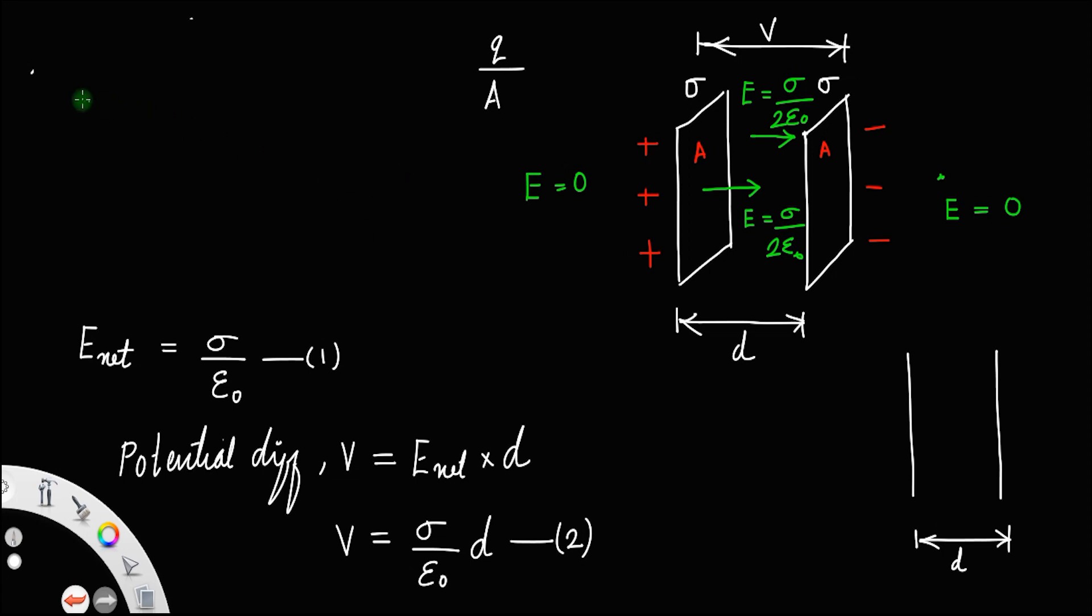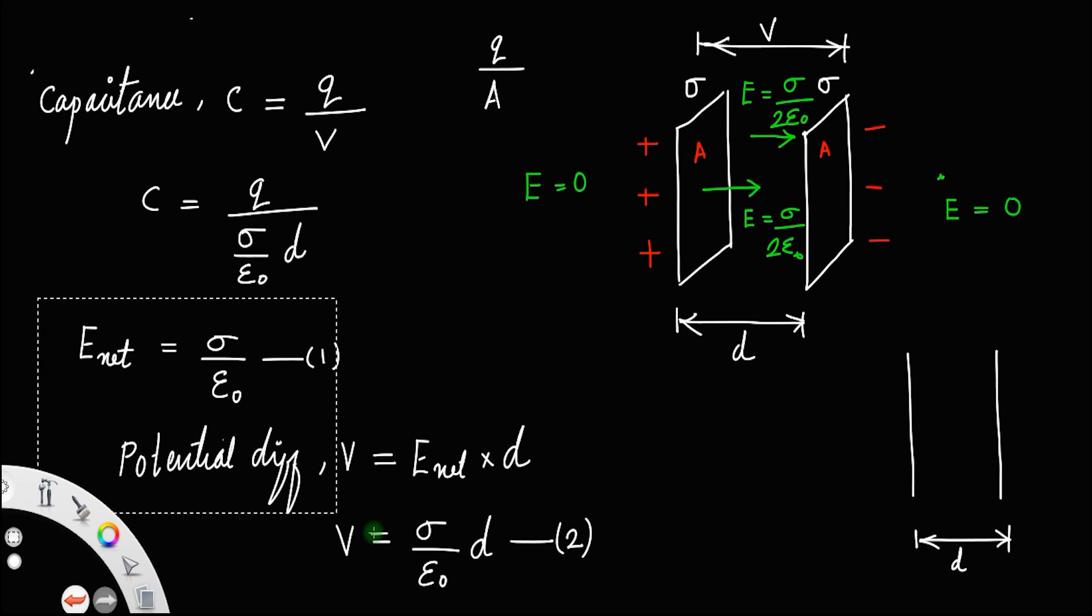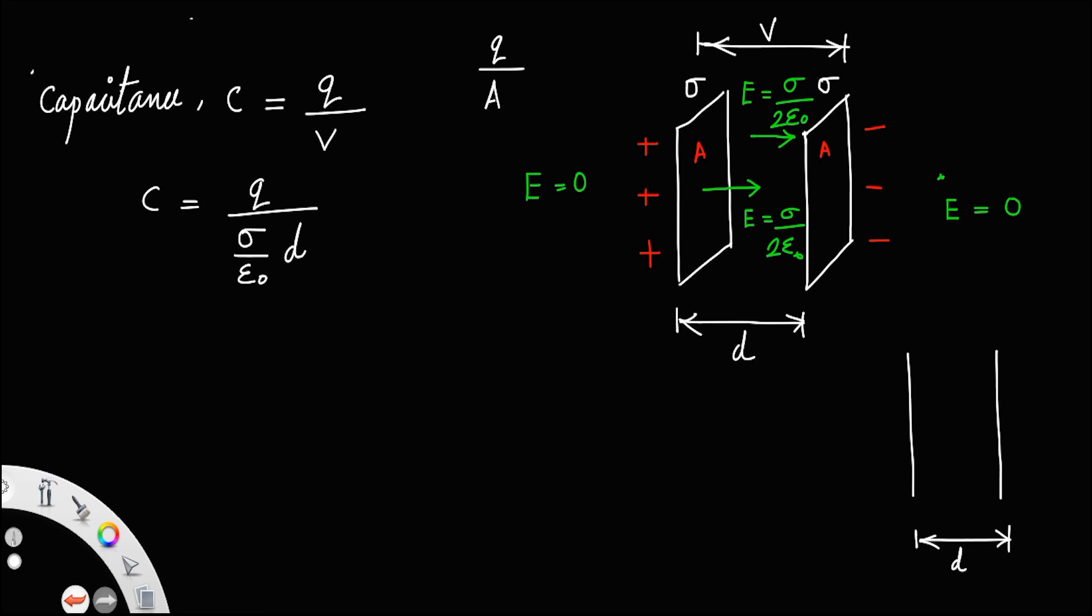Capacitance. By the definition of capacitance, C is equal to charge divided by potential difference. We have C equal to Q divided by V equal to Q divided by sigma by epsilon 0 times d. Also, we have charge density sigma equal to Q divided by A, which implies Q is equal to sigma A. Let us call this equation number 3 and you can substitute this here.